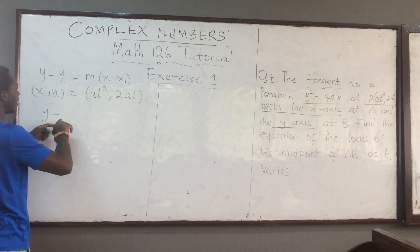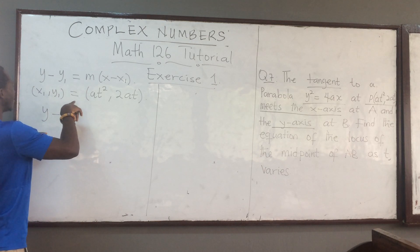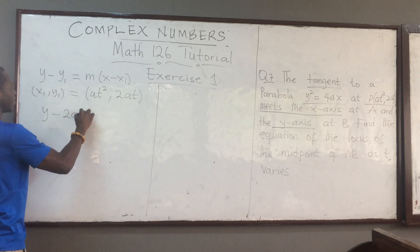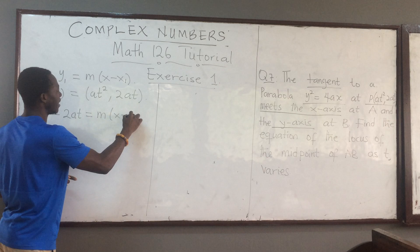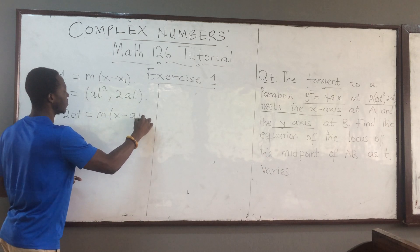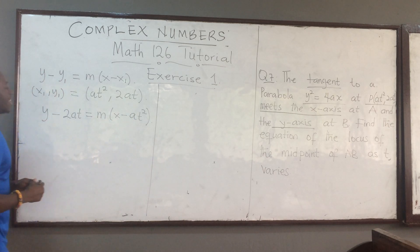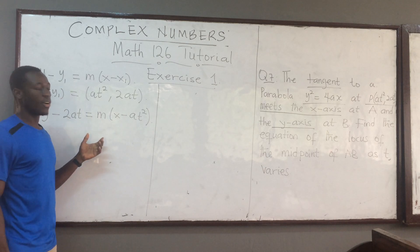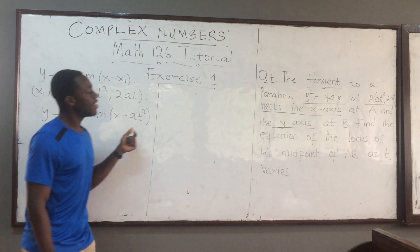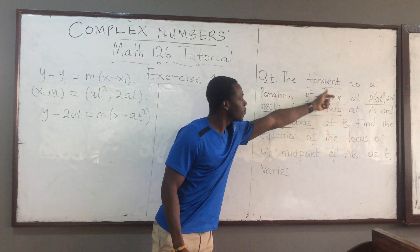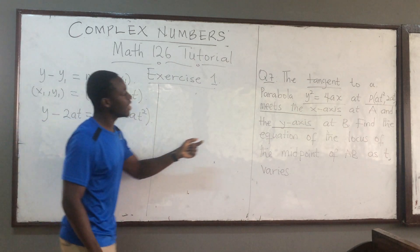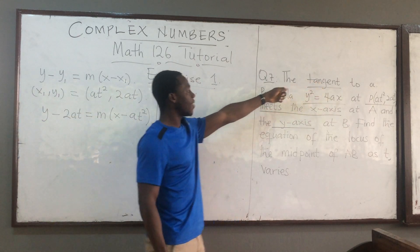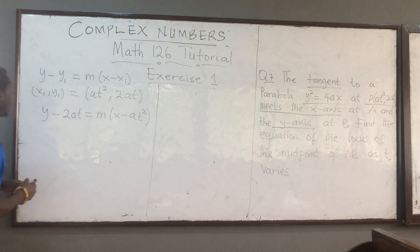So we have y − 2at = m(x − at²). Now, the gradient of the curve at this point is the same as the gradient of the tangent line. So we can find the gradient of this curve and it should equal the gradient of the tangent. To do that, we differentiate our function.